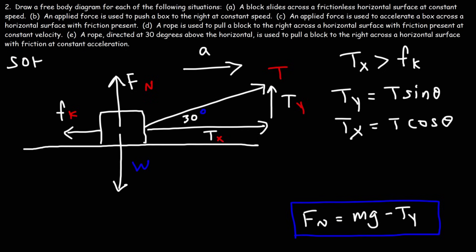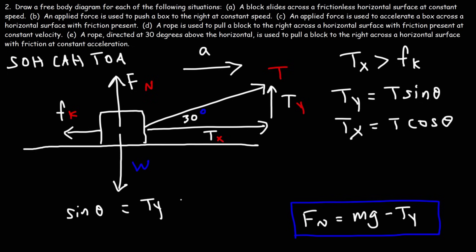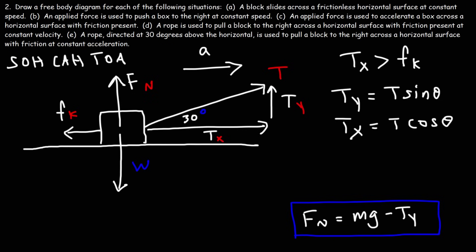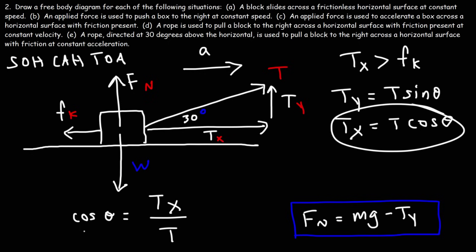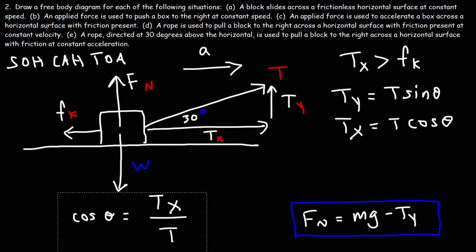Going back to the trig: sine is equal to the opposite side over the hypotenuse. So sine of theta — theta is 30 degrees in this example — equals Ty divided by T, the hypotenuse. Multiplying both sides by T, you get Ty equals T sine theta. For the cosine equation, cosine equals the adjacent side divided by the hypotenuse. Multiplying both sides by T, you get Tx equals T cosine theta. That's how you can get Tx and Ty if you know T.